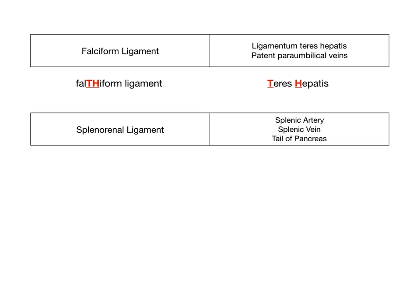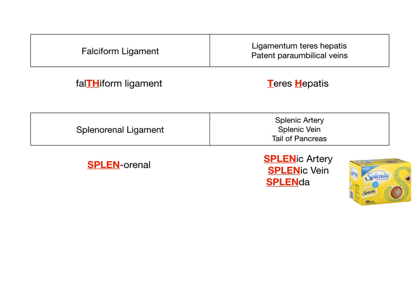The mnemonic is: splenorenal contains everything 'splen' — splenic artery, splenic vein — and then 'Splenda.' Splenda is an artificial sweetener, like sugar, and the pancreas is involved in diabetes. So if you have too much Splenda, you might have a problem with the tail of the pancreas because you'll get diabetes. Splenda → sweetener → diabetes → pancreas.